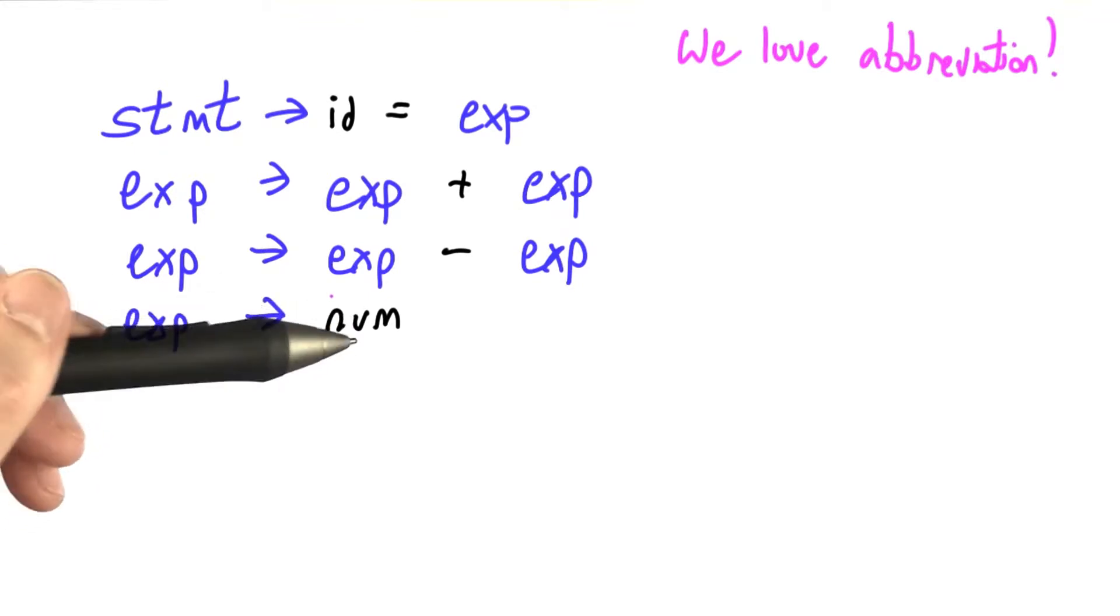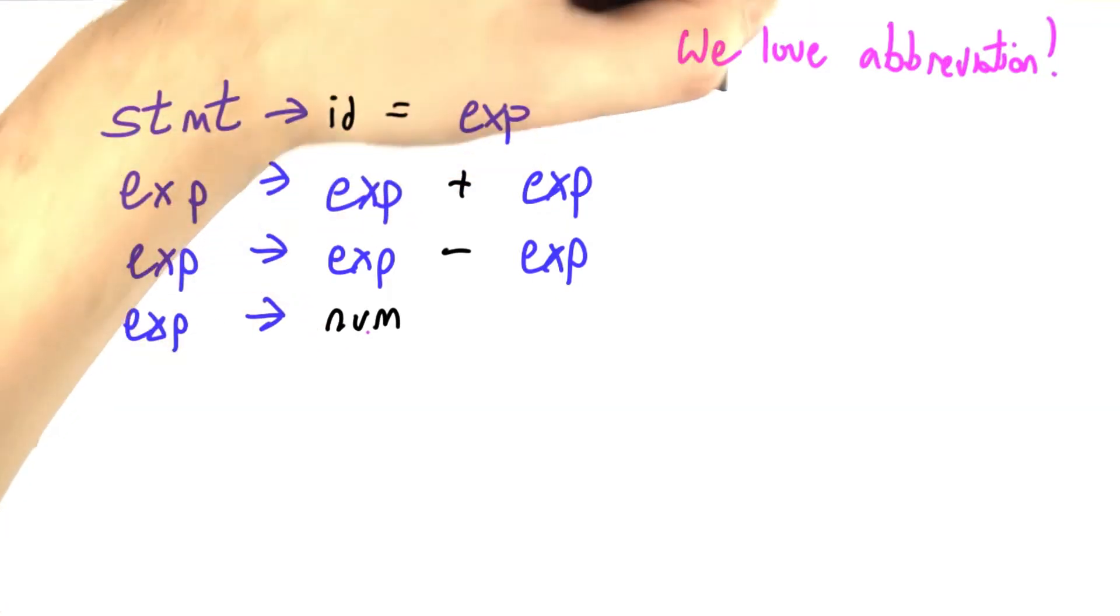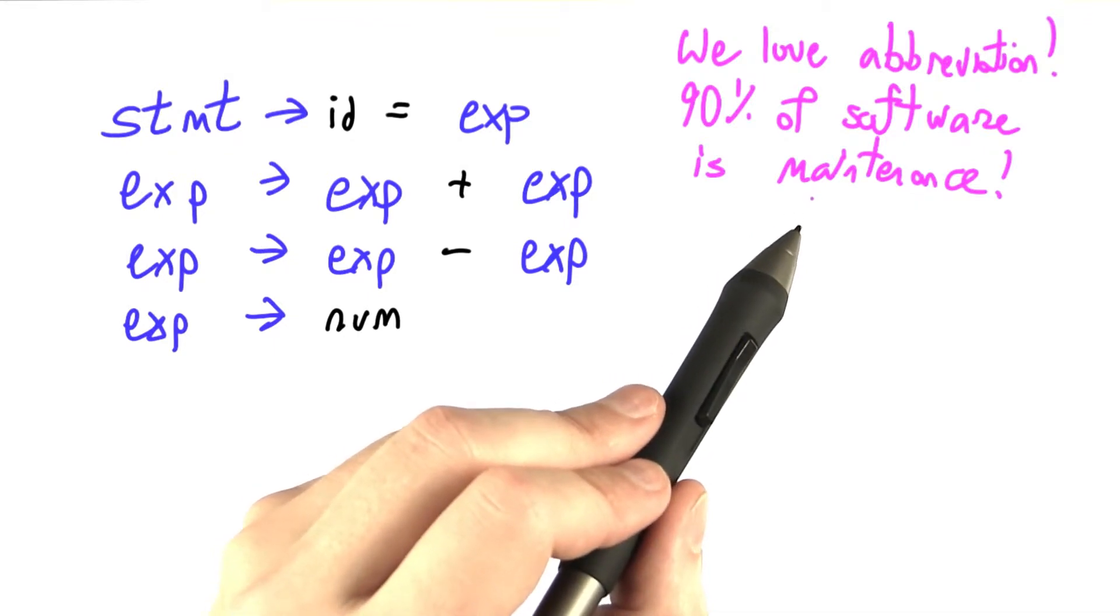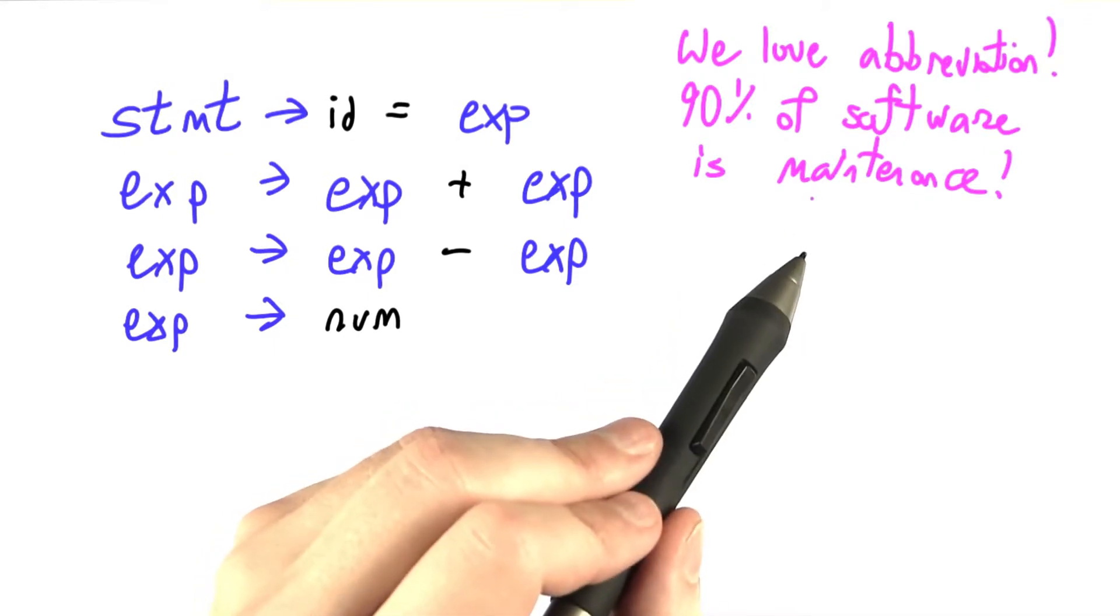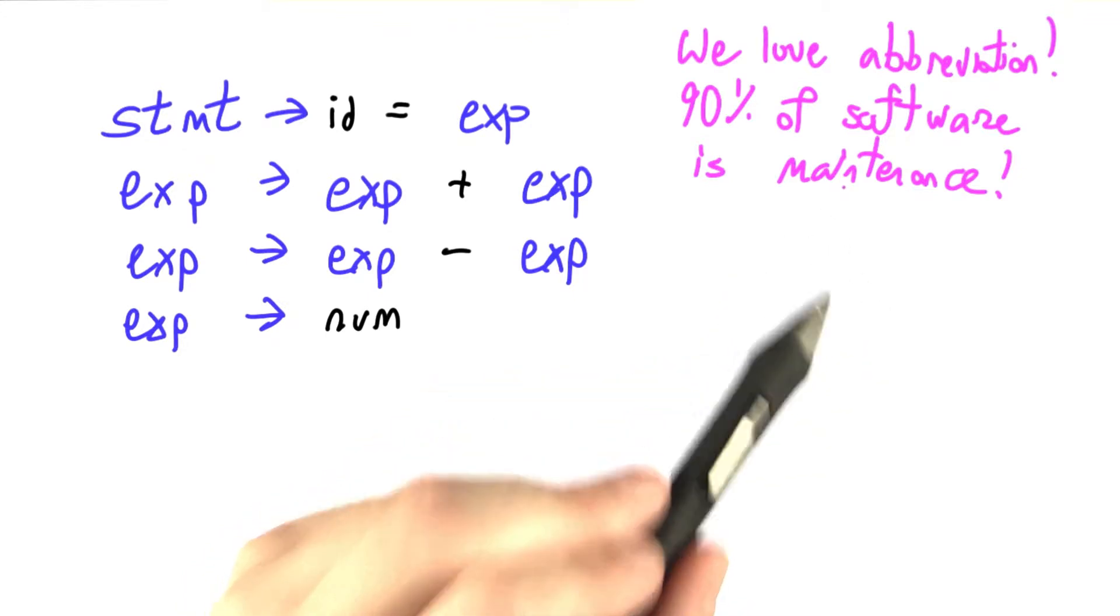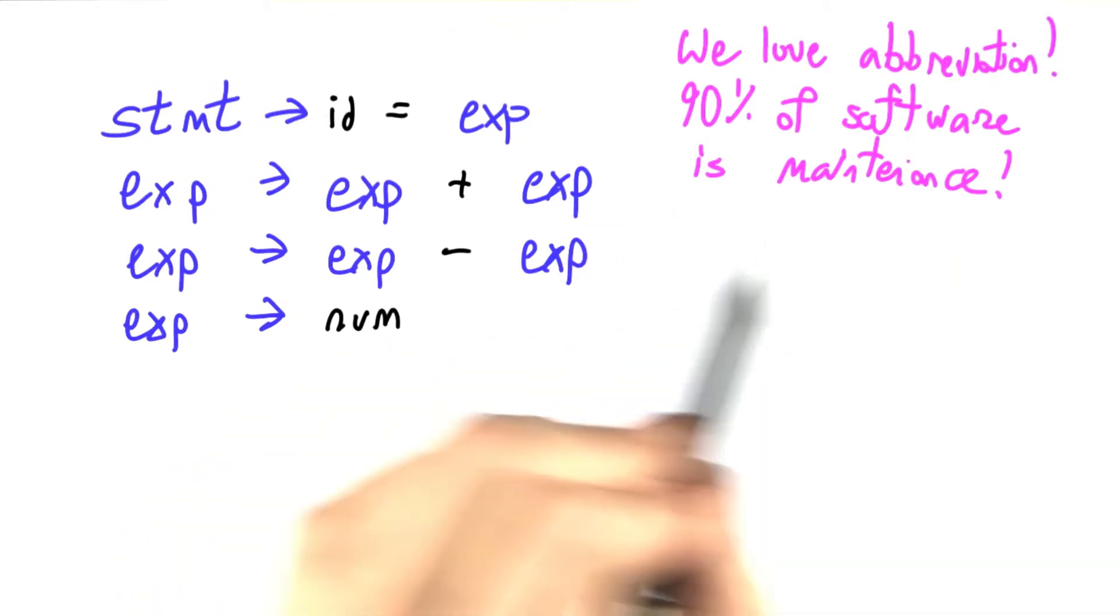Whenever possible, you should take the time to make your variable names as descriptive as possible, add lots of comments. It turns out that 90% of software is maintenance. Just like a popular book is read many more times than it's written, a program is read or maintained or executed many more times than it's written. So it's worth taking the time to do it right the first time.